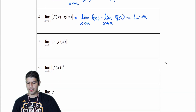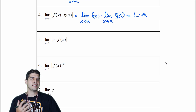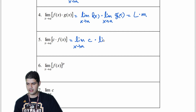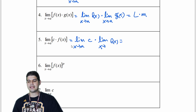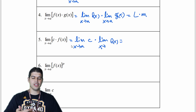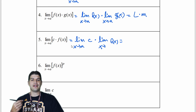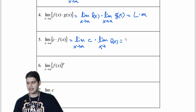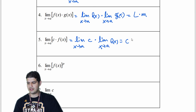In part five, c is a constant. We can write the limit as x approaches a of c times the limit as x approaches a of f of x. Since c stays constantly the same value, it won't change no matter where x is, so that evaluates to c. And since the limit of f of x is L, the result is c times L.